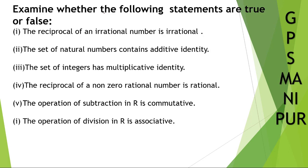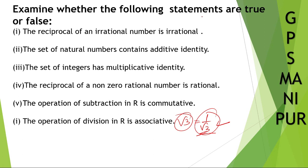Examine whether the following statements are true or false. The first one: the reciprocal of an irrational number is irrational. So you are going to take an irrational number — root 3, suppose — and if you take the reciprocal of this, then it is also irrational. So this is true.